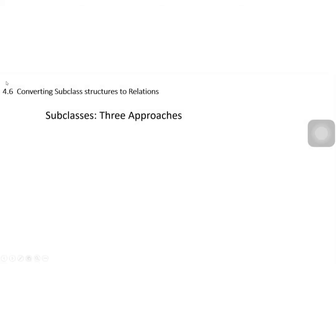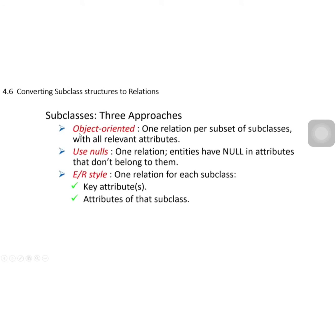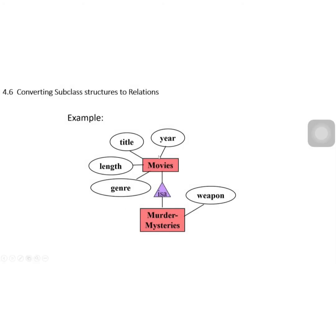Now, there may also be subclasses in an ER diagram. How do we convert a subclass? There are three ways: the object-oriented way, the null/use-null way, and the ER style way. Let's take this example.